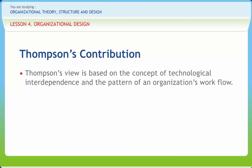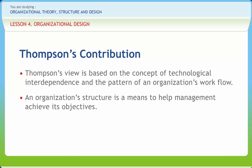Thomson's view is based on the concept of technological interdependence and the pattern of an organization's workflow. The next contextual variable of organizational design is environment — composed of institutions or forces outside the organization that potentially affect its performance. Some organizations face relatively static environments with few changing forces, while others face very dynamic environments with rapidly changing forces. Static environments create significantly less uncertainty for managers than dynamic ones. Strategy and goals also influence how the design dimensions of structure should be enacted.